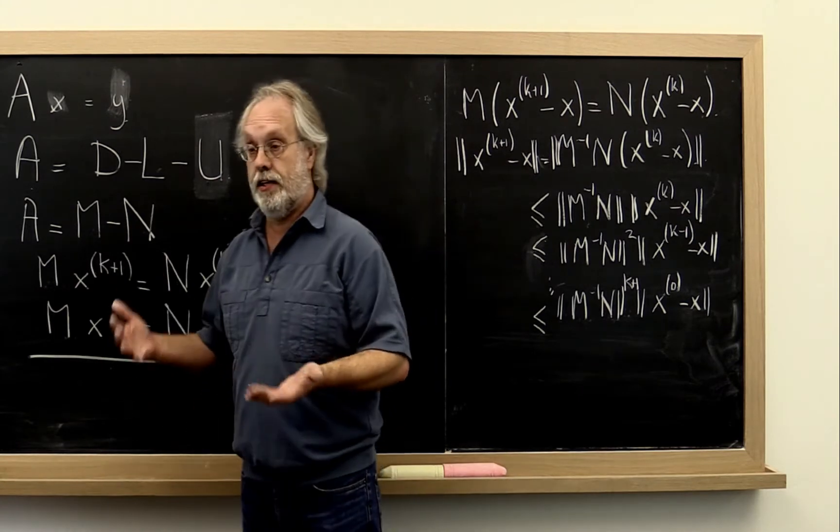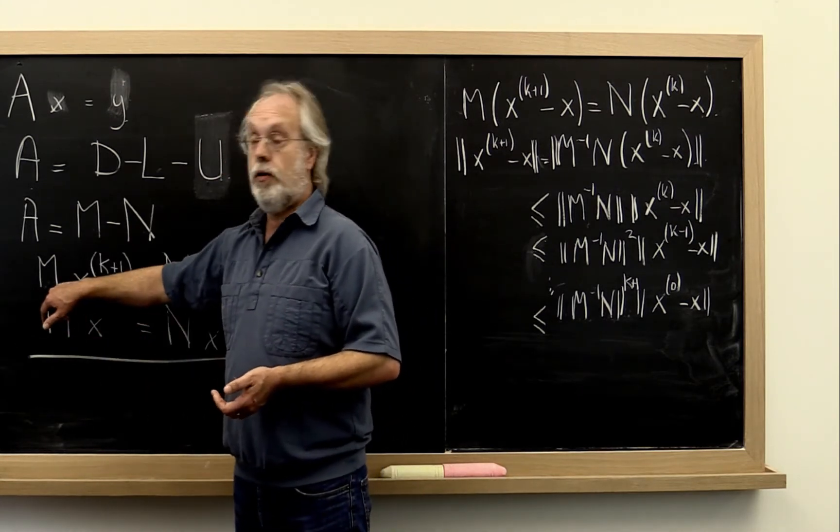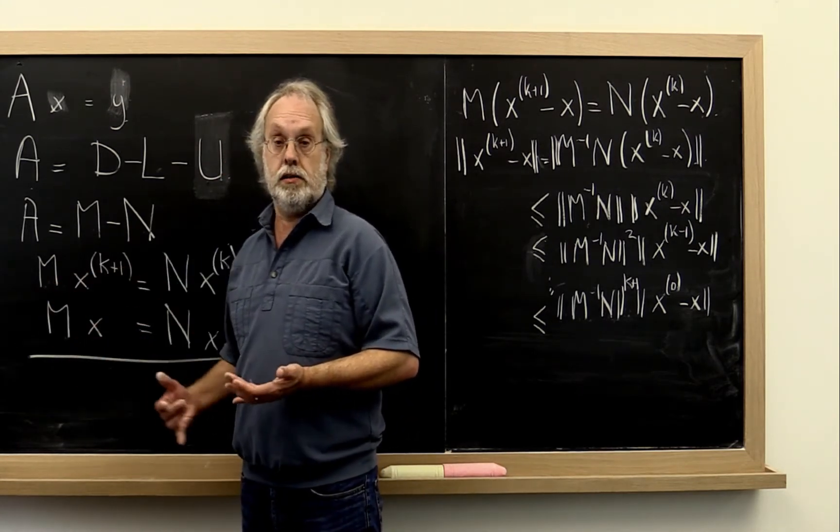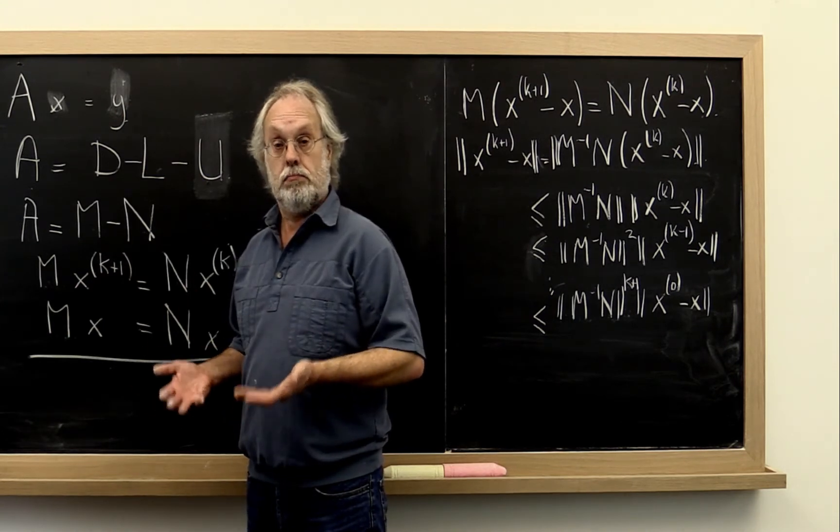Similarly for the Gauss-Seidel iteration, solving with a sparse lower triangular system is cheap. So that's convenient.